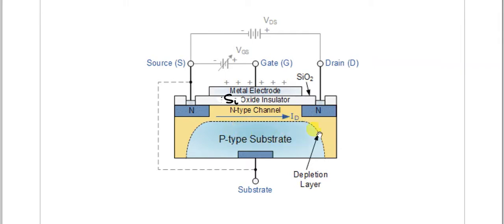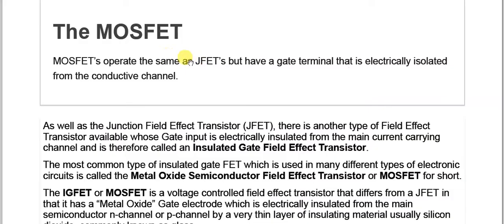We will see the operation. There are two types which we will also discuss, but this is the basic construction of the MOSFET, Metal Oxide Semiconductor Field Effect Transistor. The MOSFET operates the same as the JFET but has a gate terminal that is electrically isolated from the conductive channel.